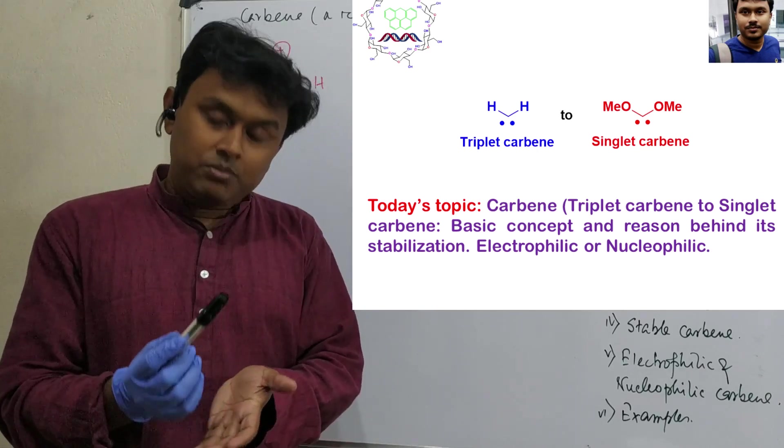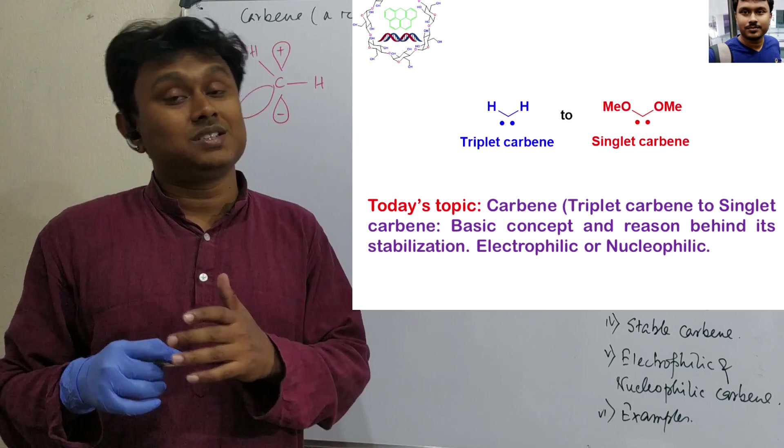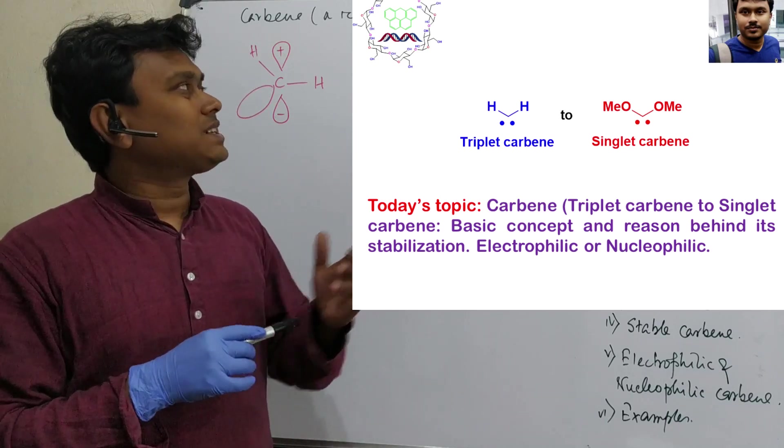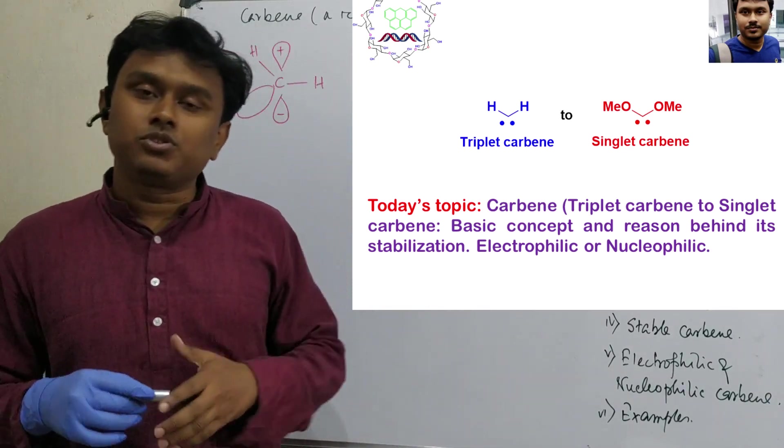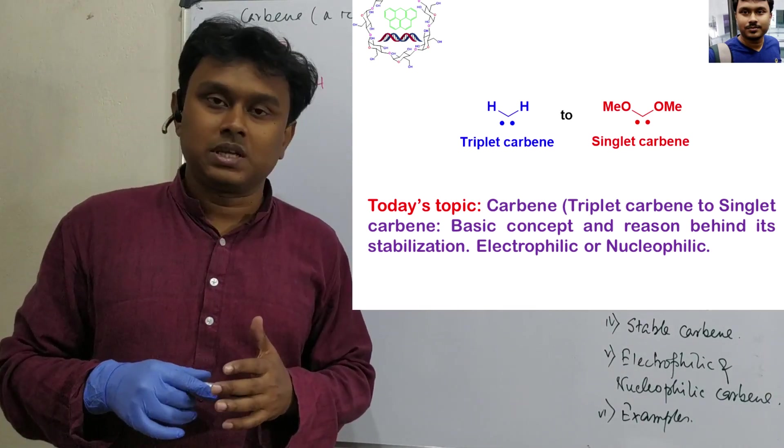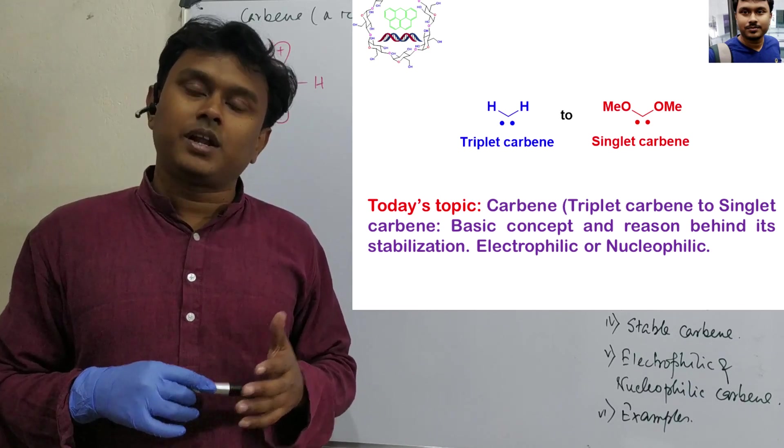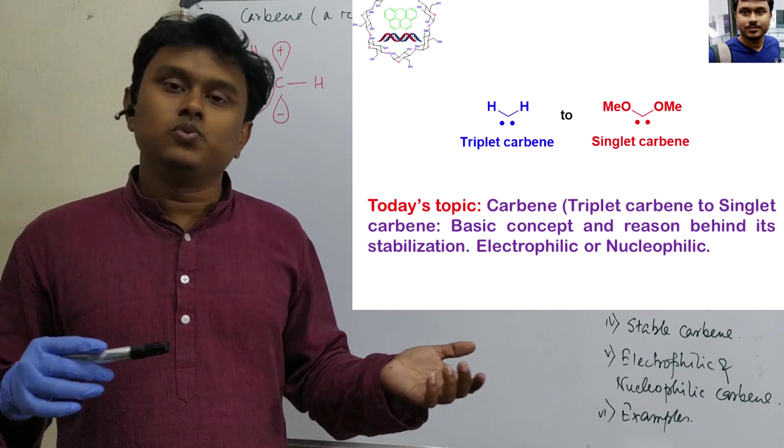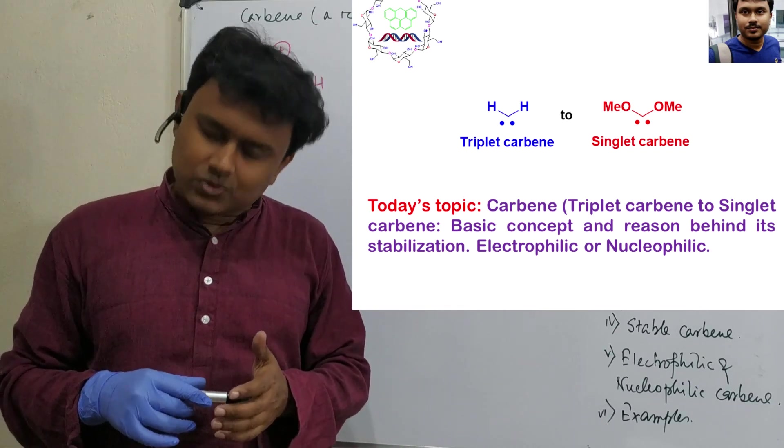Why is this important? Because they are reactive intermediates. So getting some stable carbene is another important thing. And finally we will discuss about when they will be electrophilic, when they will be nucleophilic with few examples. So a lot of chemistry to be learned. Let's start.